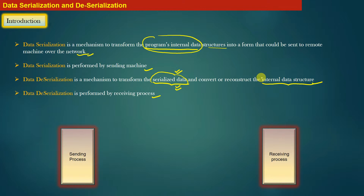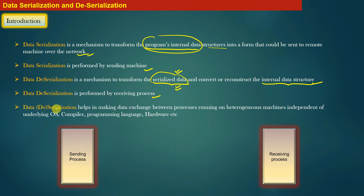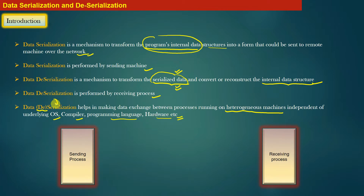For example, if the serialized data represented a linked list on the sending machine, then data deserialization is the process to reconstruct the same linked list on the receiving machine from the serialized data. We will go into practice all these concepts by writing actual code. Note: whenever I say 'de-serialization' with 'de' in brackets, I am referring to both data serialization and data deserialization. This helps in making data exchange between processes running on heterogeneous machines independent of the underlying operating system, compiler, programming language, hardware, and more.